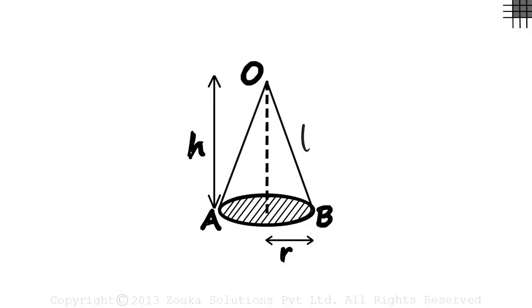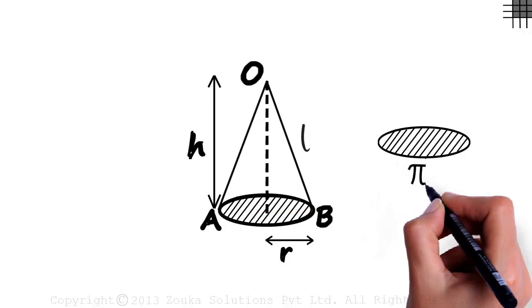First let us consider the circular base. The radius of the circular base is R so its area will be pi r squared.